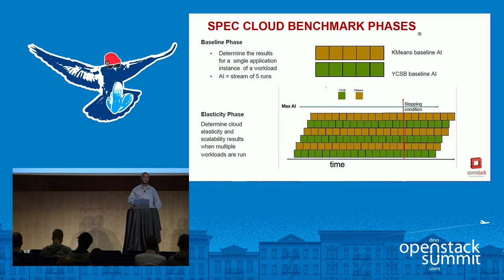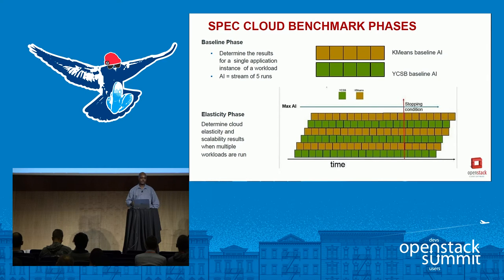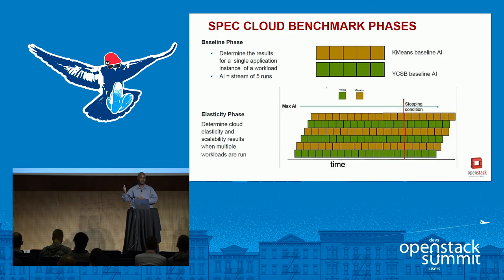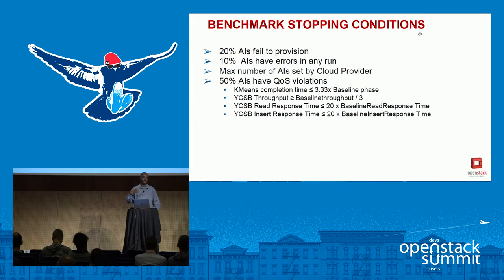In the baseline phase, you run one single application instance — K-Means first, then YCSB. The baseline phase collects the statistics used in the elasticity and scalability phase. After completing baseline, you run the elasticity phase where you start loading all instances until you start getting errors, or your SLA kicks in because you're not getting the right throughput.